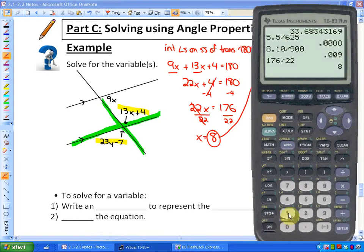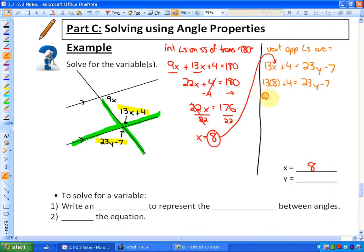I'm first of all going to just calculate 13 times 8, which is 104. So we have 104 plus 4 is equivalent to 23y minus 7. Simplifying the left hand side, we'll have 108 is equivalent to 23y minus 7. So we've simplified each side and now we can algebraically solve. Add 7 to both sides. We have 115 is equal to 23y, and dividing by the coefficient 23, we'll have that y is equivalent to 5.